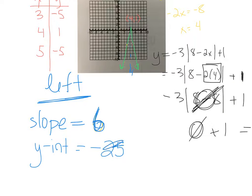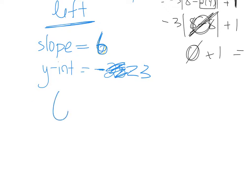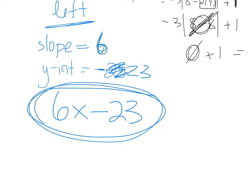I did not count correctly. That should be a negative 23 instead, a wee bit off. So then the equation of that line is 6x minus 23. So that's the equation for the left part of our absolute value graph.